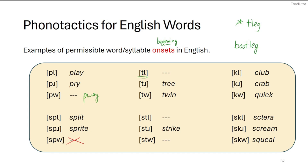What we don't find in English is any 'stw' sounds — we don't say things like 'stwing.' Although we have 'tw,' we don't have 'stw.' With our 'k' clusters, we have 'cl,' 'cr,' and 'qu,' so we have 'scl,' 'scr,' and 'squ' as in 'sclera,' 'scream,' and 'squeal.' Some of these may be more rare than others, but these are all permissible sounds in English.